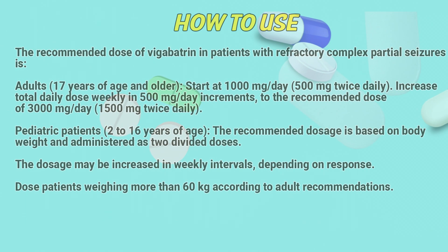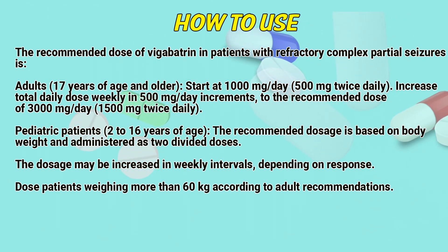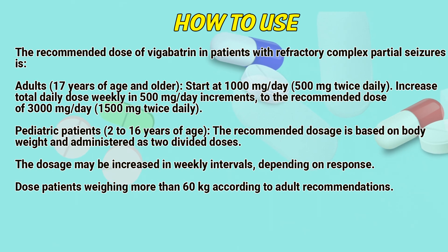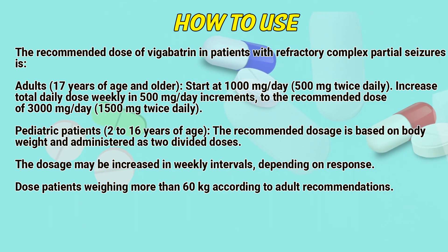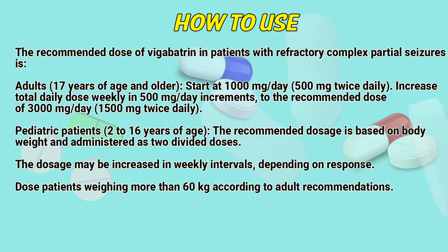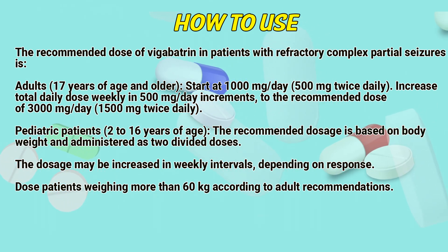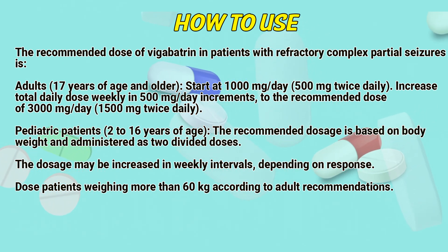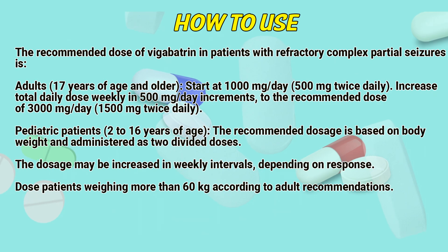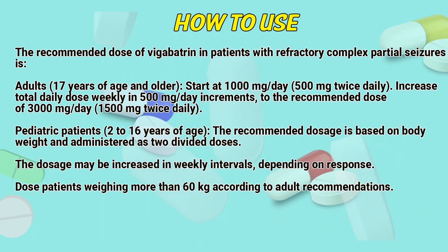How to use: The recommended dose of Vigabatrin in patients with refractory complex partial seizures — adults 17 years of age and older — start at 1000mg per day, 500mg twice daily. Increase total daily dose weekly in 500mg per day increments to the recommended dose of 3000mg per day, 1500mg twice daily.